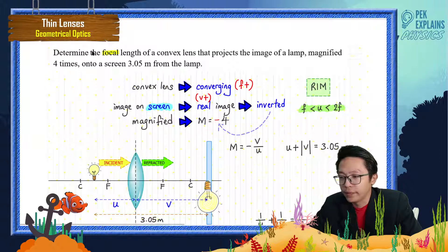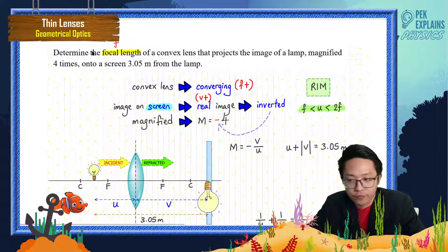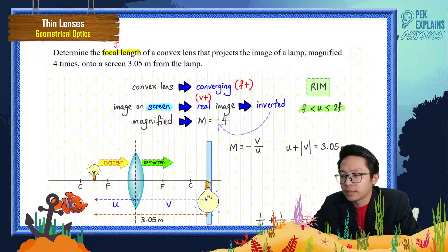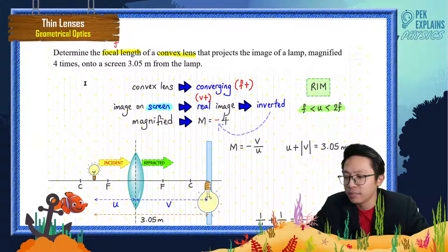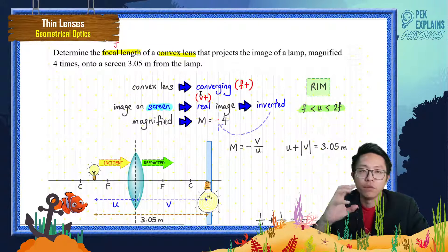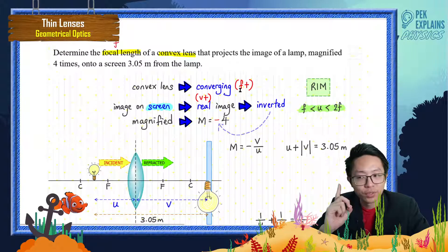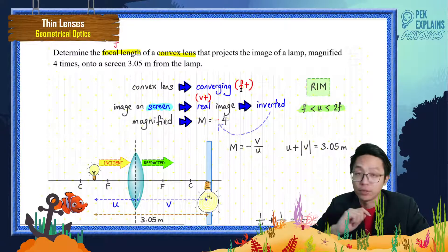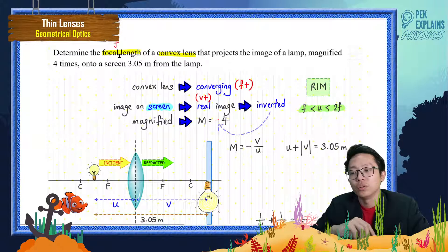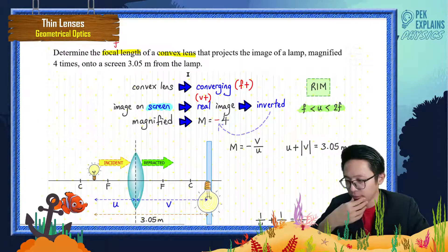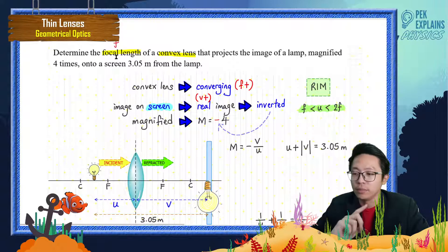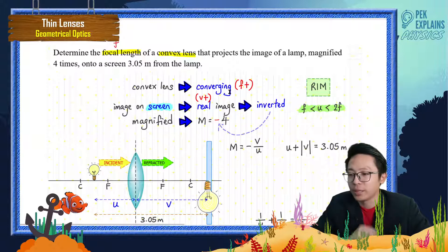First, the question asks for focal length — that means we need to find f. Second, it says convex lens, which is a converging lens. Remember the 'fat guy' — it can only converge light. A converging lens must have f positive. So we already know the answer will be a positive value for f.